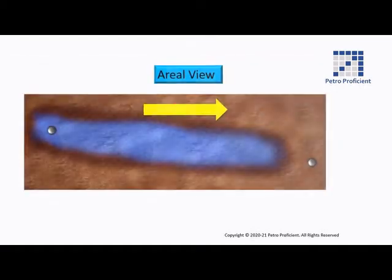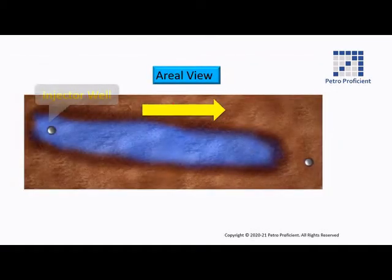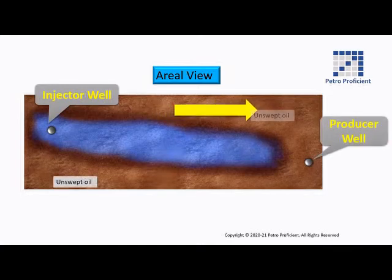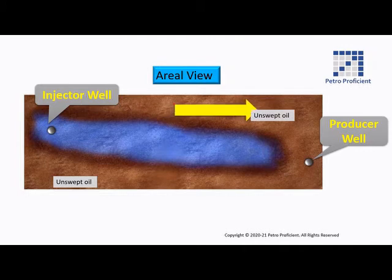From the aerial view, it can be seen that the traditional water flood narrows its course, bypassing a large amount of unswept oil in the displacement zone. This reduces the aerial sweep efficiency.